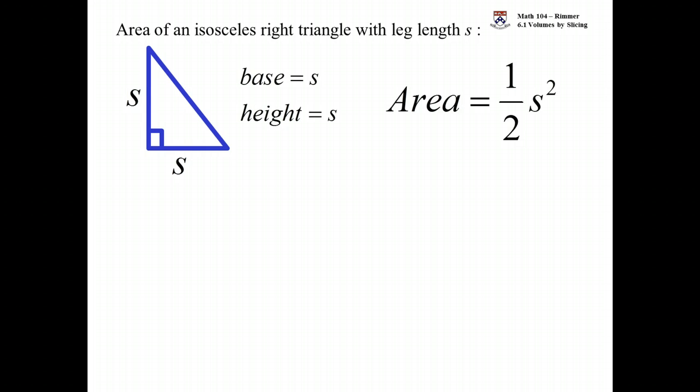Next up, we'll look at an isosceles right triangle where the legs have length S. And this is just half of that square that we saw in the last slide. The base and height are both S, so one-half of S squared is the area.